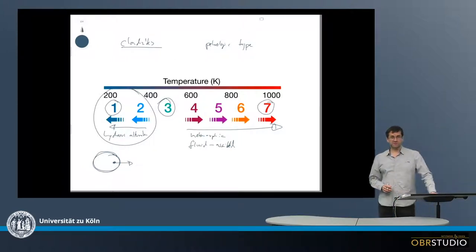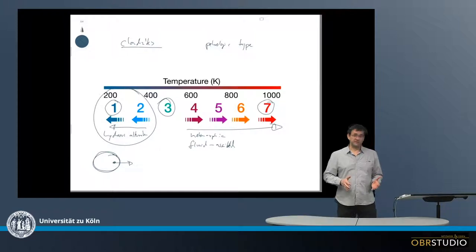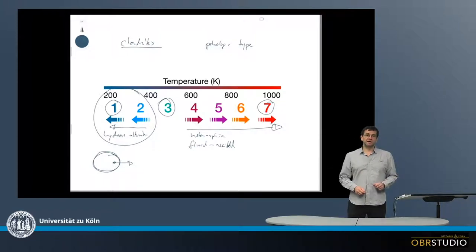So this is a very important scale we have to indicate what happened to a meteorite on the parent body and how primitive the meteorite is we might be studying. So this is how the scheme of petrologic type works.